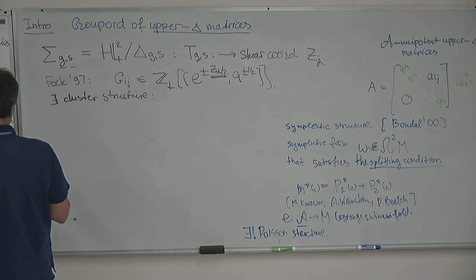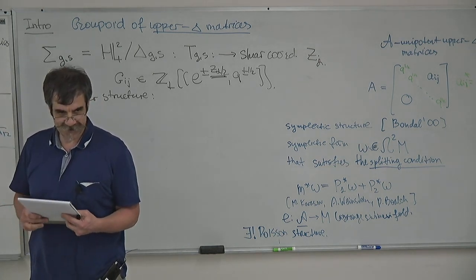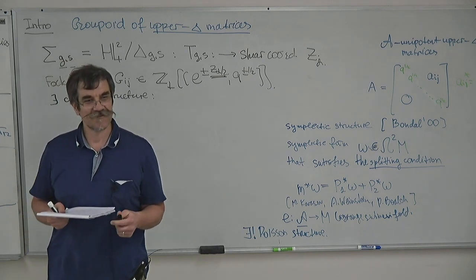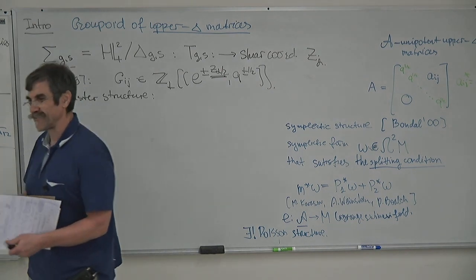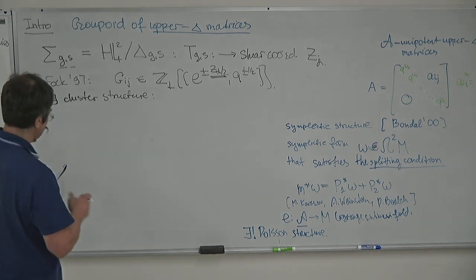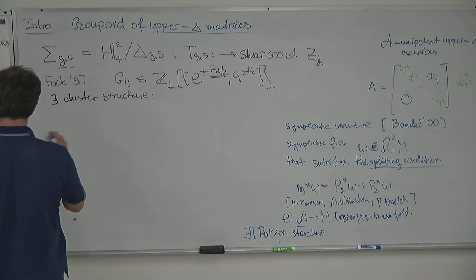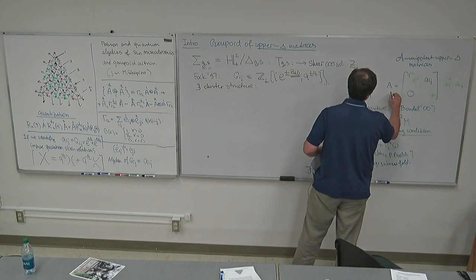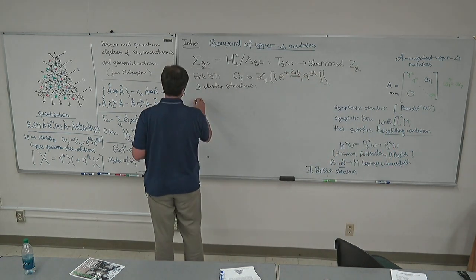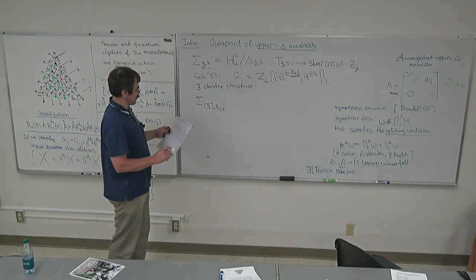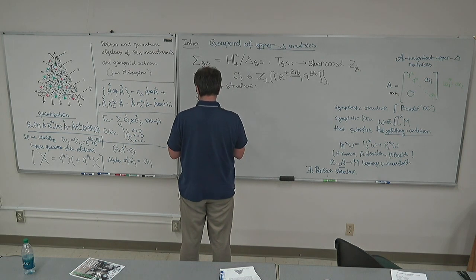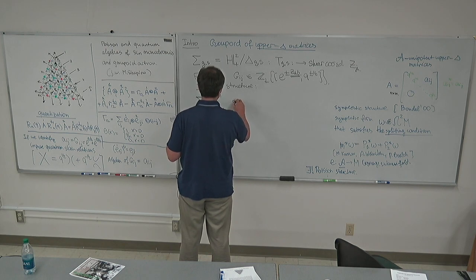There is also an existing cluster structure governing these shear coordinates. One observation that was bothering me: for a matrix of size n×n we have to take a Riemann surface of genus equal to the integer part of n/2, with s equal to 1 or 2 depending on the parity of n. The Poisson dimension of the Teichmüller space is 6g−6+2s, while the Poisson dimension of the matrix space of size n grows quadratically in n.